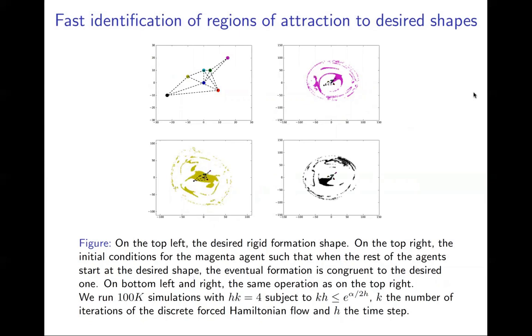This is interesting for growing formations since it gives us information on the areas that are safe to deploy a new robot in a given formation. We have run 100,000 simulations with a time interval of 0.4 subject to those positions where the convergence time is lower than a threshold.